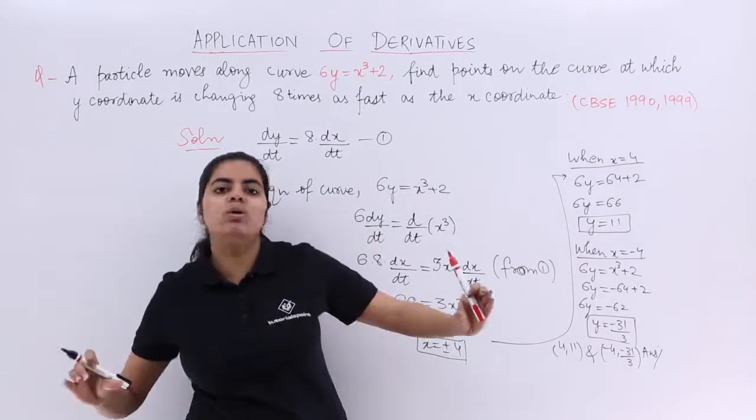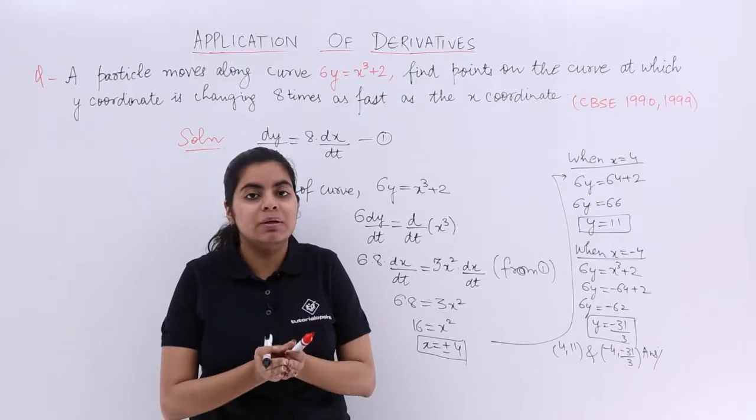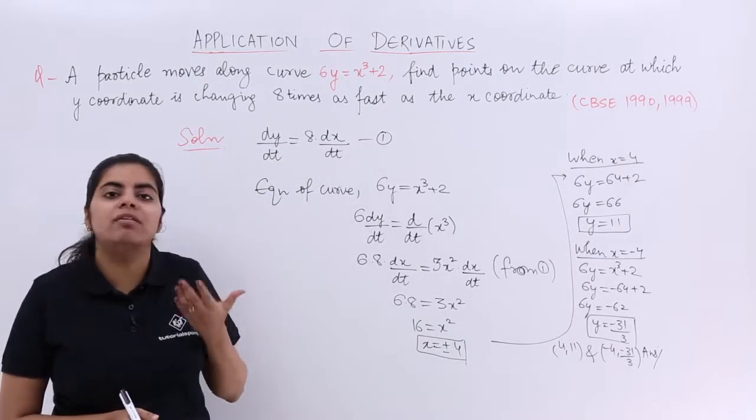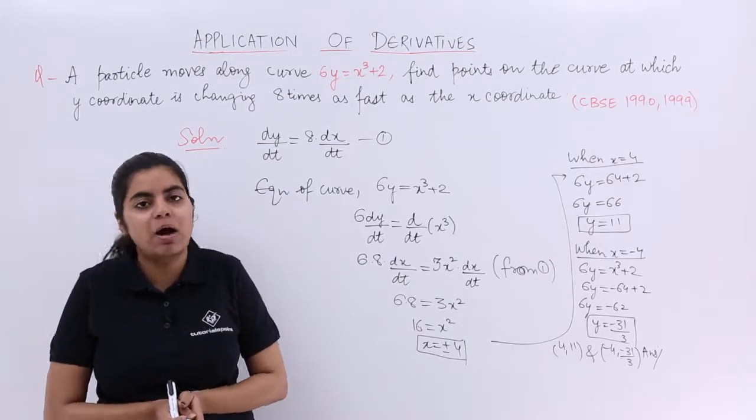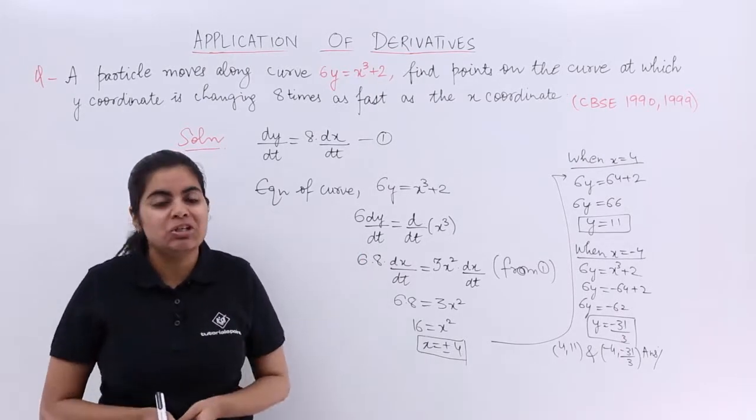So obviously you will be writing the whole statement that the required points are the first point and the second point. But the concept is important that whenever you have the rate of change, it is talking about the differentiation of that first quantity with respect to the second quantity.